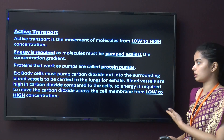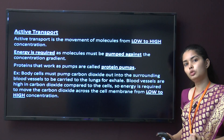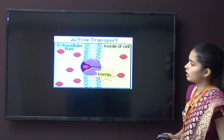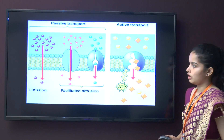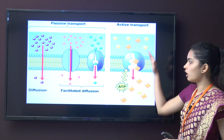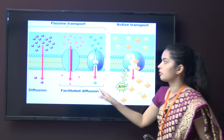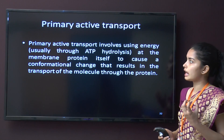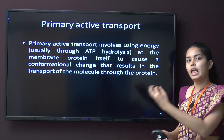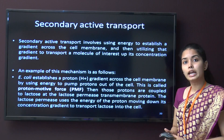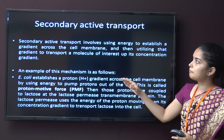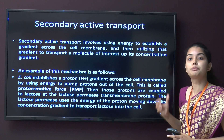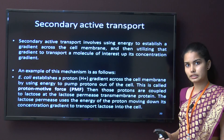An example of active transport: carbon dioxide must be pumped into surrounding blood vessels and carried to the lungs to be exhaled. Blood vessels with high concentration of carbon dioxide still intake carbon dioxide so it can be released from the body. Primary active transport directly uses ATP hydrolysis for energy. In secondary active transport, ATP hydrolysis establishes a gradient across the cell membrane, and that gradient is then used to transport a molecule of interest up its concentration gradient.